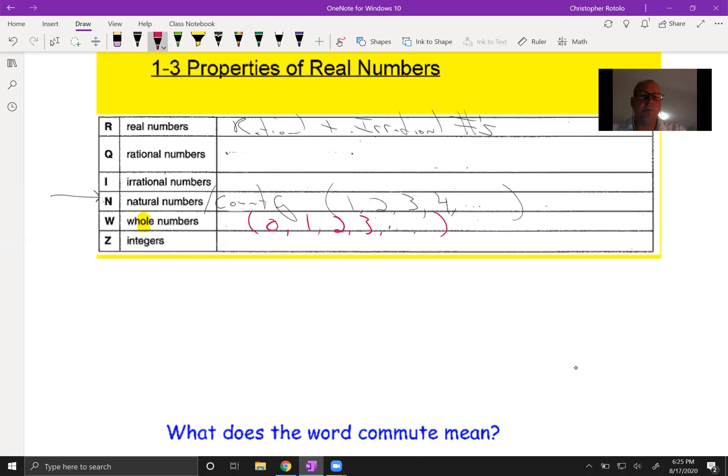Integers, what do we allow in the group now for integers? Negative three, negative two, negative one, zero, one, two, three, dot dot dot. Both ways. Notice, no decimals, no fractions. This is the big key here. A lot of times, I'll ask kids, what about negative 2.2? All of a sudden, they'll say integers, but no decimals, no fractions in your integers.